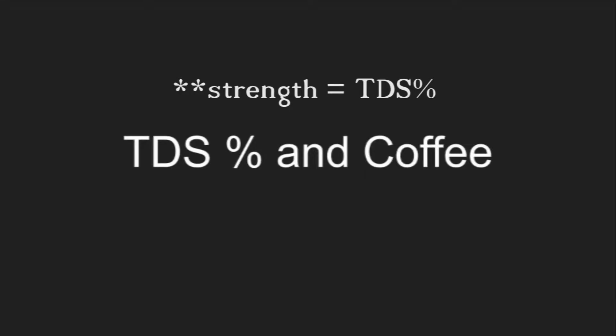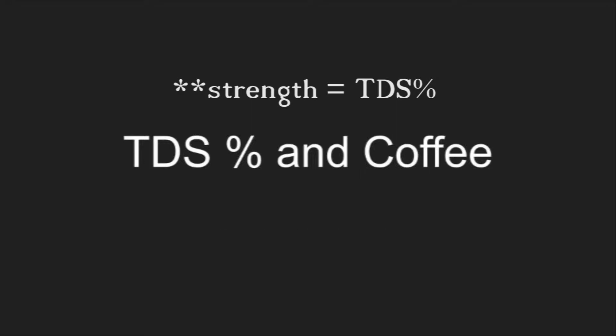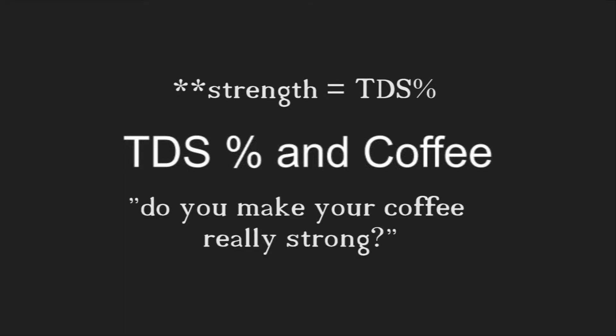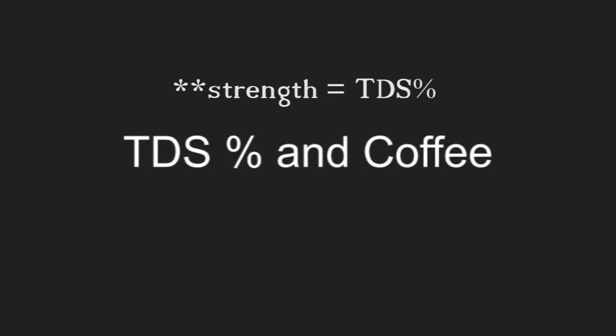When talking about TDS or total dissolved solids percentage, I want to give, first of all, a definition of what that really means and how it is relevant to our needs. Second, a range of TDS percentages that the SCA deems acceptable or optimal. And then we'll talk about calculating the amount of coffee suspended — it's a very simple multiplication equation that you can do on your phone.